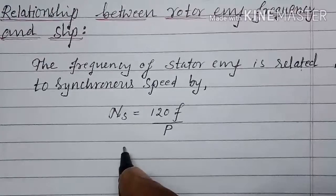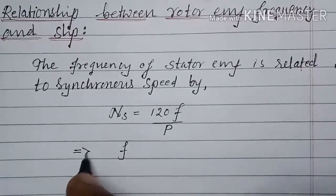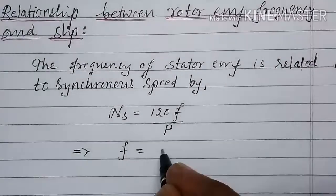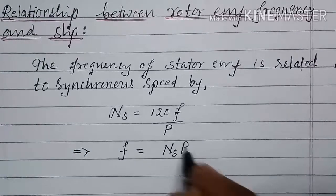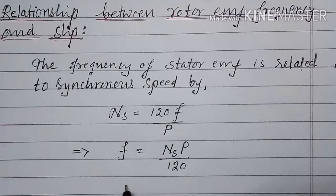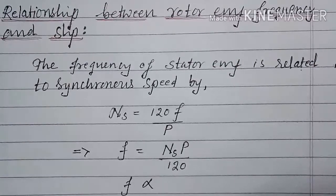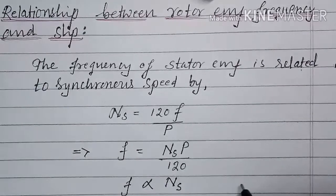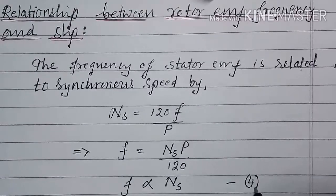From this, we can write an expression for stator EMF frequency as: F = (Ns × P) divided by 120. Or, stator EMF frequency F is directly proportional to synchronous speed. We will call this equation 4.